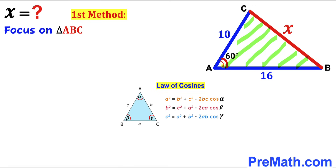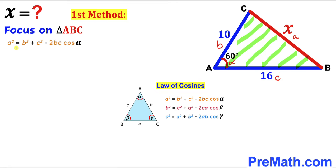If I label the angle at vertex A as alpha, then the opposite side length is lowercase a. The side opposite to vertex B is lowercase b, and the side opposite to vertex C is lowercase c. We are going to use the law of cosines formula and fill in the blanks.